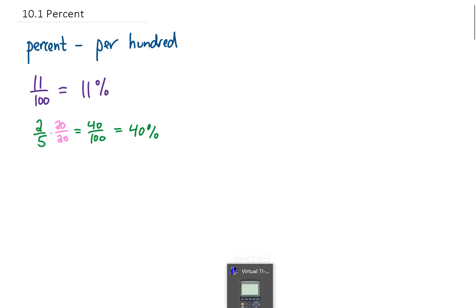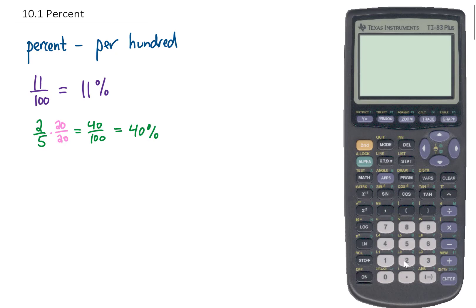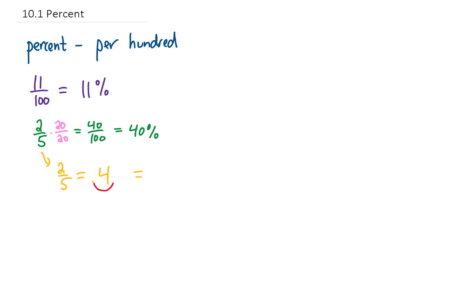If we were asked to write the fraction 2 fifths as a percent, what we would do is type 2 fifths into our calculator. Our calculator would spit out a decimal, 0.4. To convert a decimal into a percent, we move that decimal place twice to the right. So we move it once, twice to the right, and that gives us 40. Then we put a percent sign on there and we're finished.